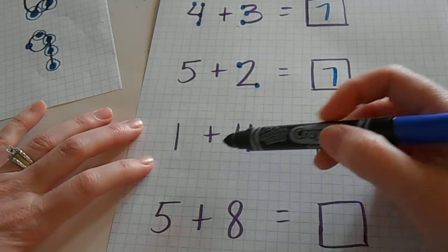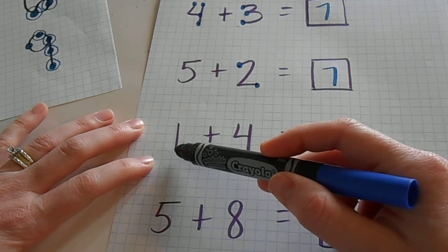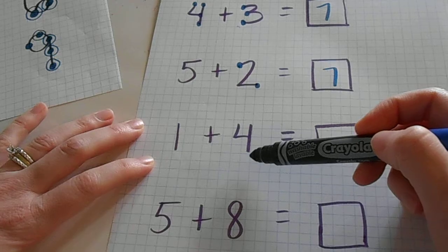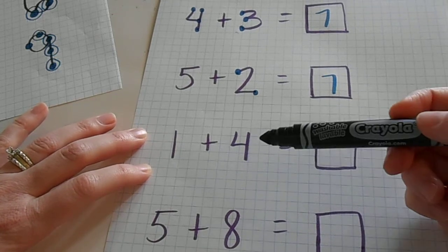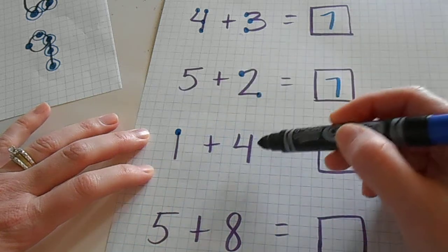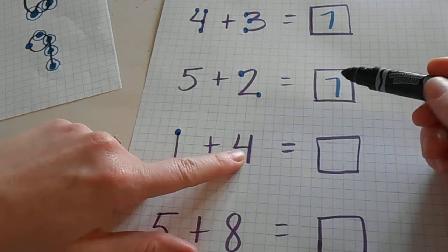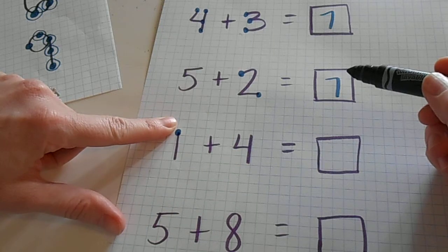Even down here when you are presented with an addition problem where the first number is the smaller number and the second number is the bigger number, you want to start to teach your kids, okay, which one is smaller? That's the smaller. That's the one that we're going to count because we already know that the four is the bigger number. So we can start with four and count on five.